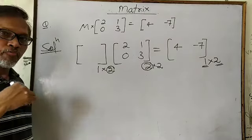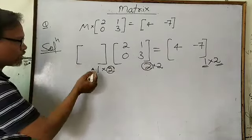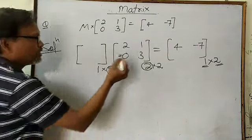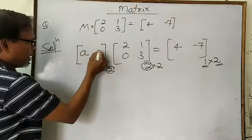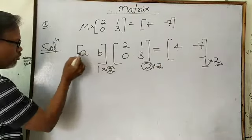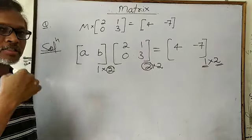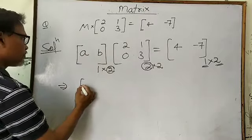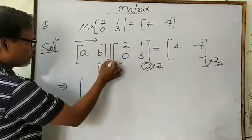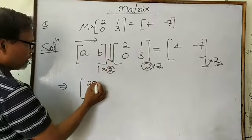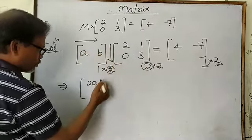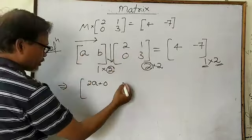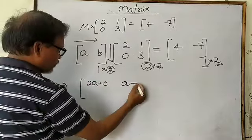Now you know the order of matrix M. To fill the elements, since M has 1 row and 2 columns, write the elements as A and B. Then start the multiplication: A into 2 gives 2A, B into 0 gives 0, then for the next column A into 1 gives A, then B into 3 gives plus 3B.